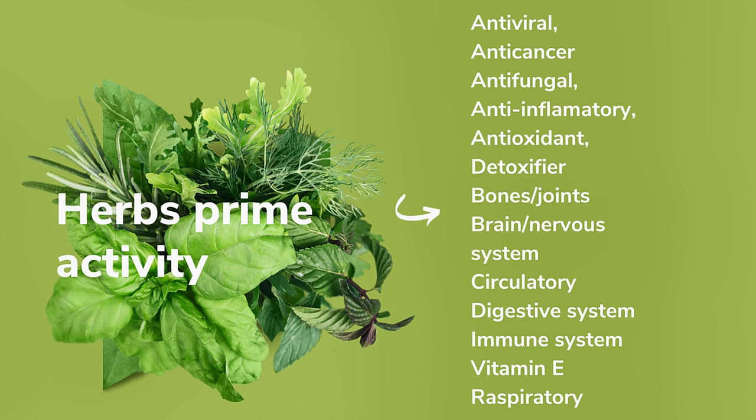The fourteenth property is galactagogues — herbs which help secretion of milk. Examples are anise seed, fenugreek seeds, dandelion, fennel, and raspberry. The fifteenth property is hemostatics — herbs that stop internal bleeding or hemorrhage. Examples are bayberry, beet root, nettles, white oak bark, witch hazel, and yarrow. The sixteenth property is lithotriptics — herbs that dissolve and discharge urinary and gallbladder stones and gravel. Examples are gravel root, corn silk, barberry, buchu, dandelion, chaparral, juniper berries, and marshmallow.